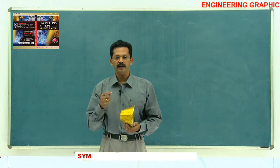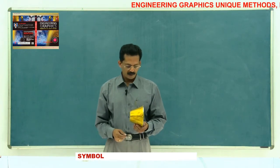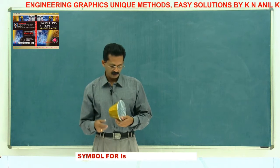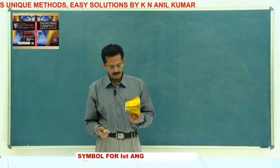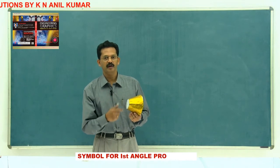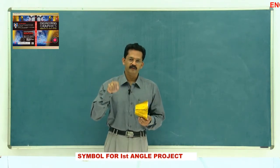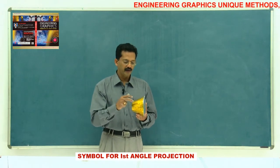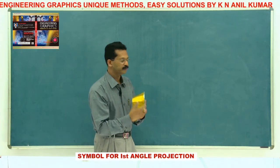We will look at the symbol for first angle and third angle projection. Consider the frustum of a cone — this is only the base, which is circular in shape, and this is the section, again circular in shape. If the object is in the first octant, the left side view you will get at the right side of the main front view.